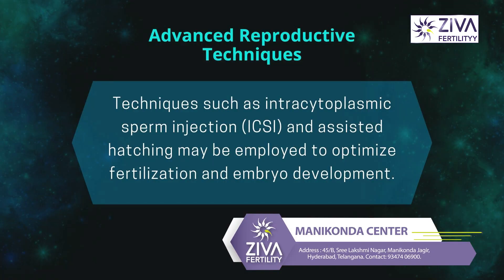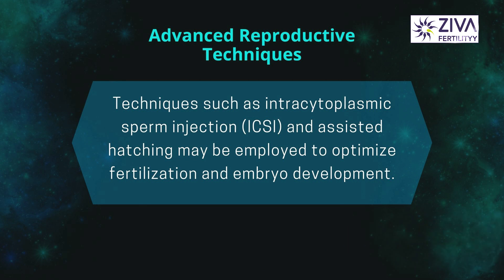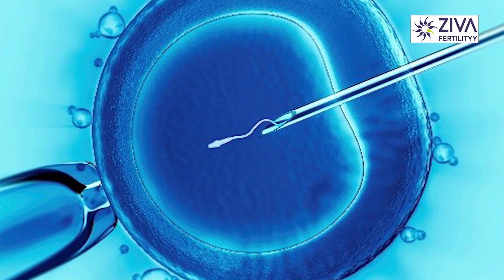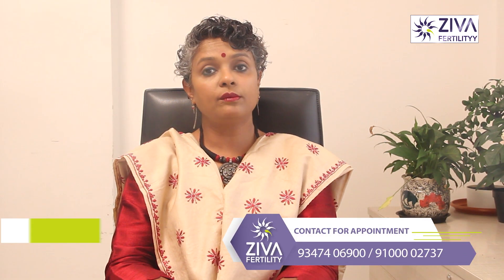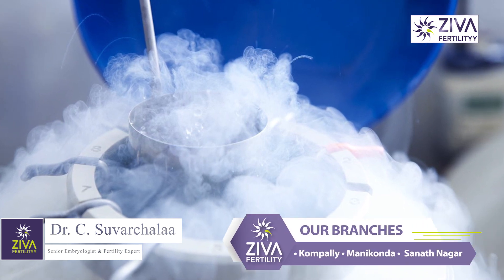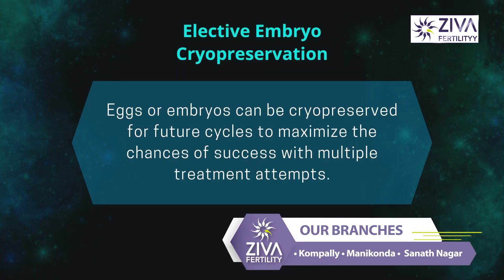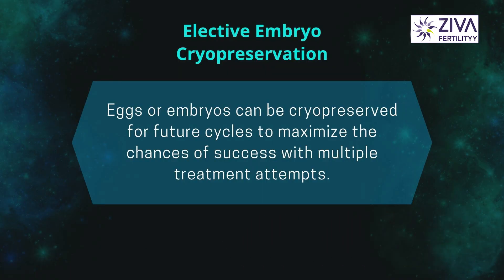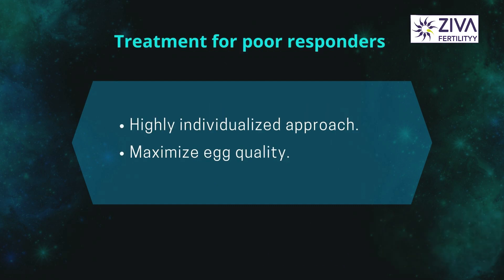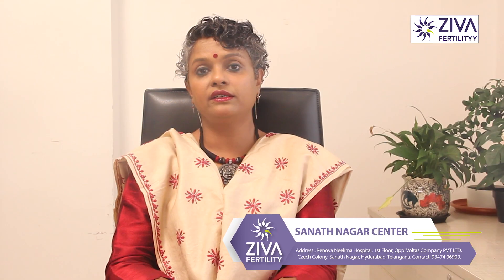Then, of course, we have the assisted reproductive techniques. Techniques such as intracytoplasmic sperm injection and assisted hatching may be employed to optimize fertilization and embryo development. Elective embryo cryopreservation is also a very good protocol. Eggs or embryos can be cryopreserved or frozen for future cycles to maximize the chances of success with multiple treatment attempts. Treatment for poor responders requires a highly individualized approach with focus on maximizing the quality of eggs retrieved rather than simply increasing their quantity.